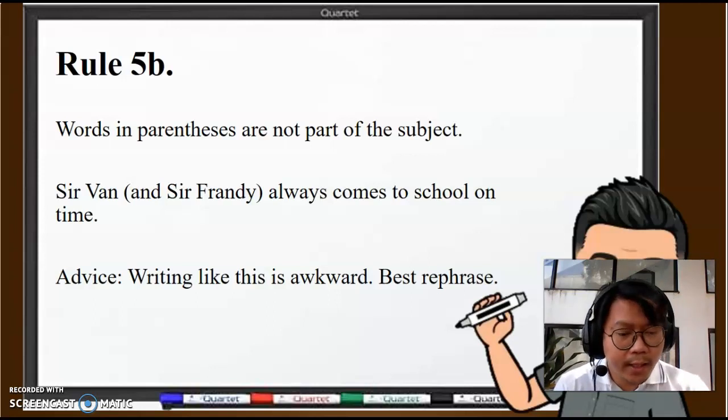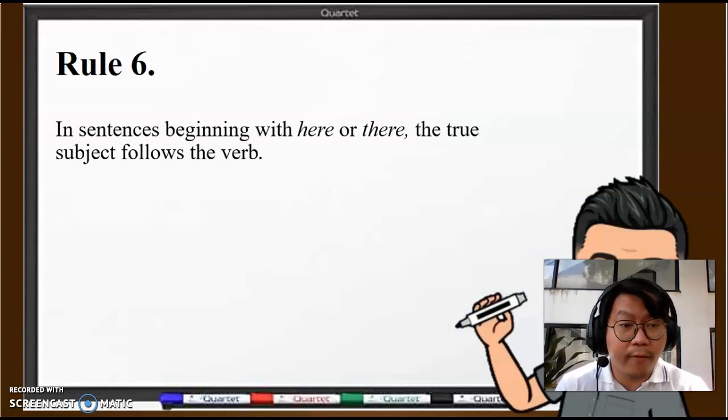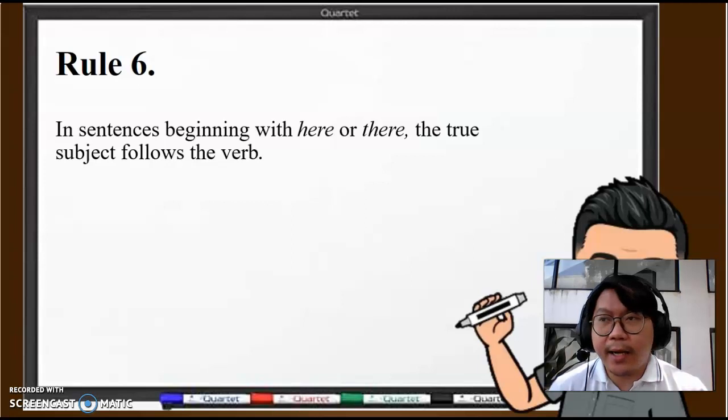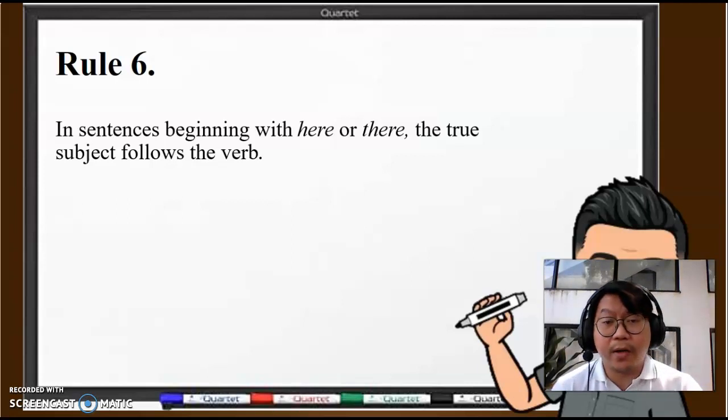Next rule, Rule number 6: In sentences beginning with "here" or "there," the true subject follows the verb. Why is there a "true subject"? Does that mean there's a fake subject? Well, the words "here" and "there" are what we call dummy subjects. It sounds like they are the subject of the sentence, but not really, because normally they're at the start of the sentence.